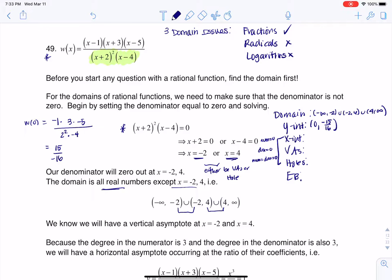So let me erase this little part up here about the three domain issues. Let's take a look at our function and see what we can do here. I want to set the numerator to zero, set the denominator to zero, and see if they have anything in common. We already set the denominator to zero. We got negative two and four.